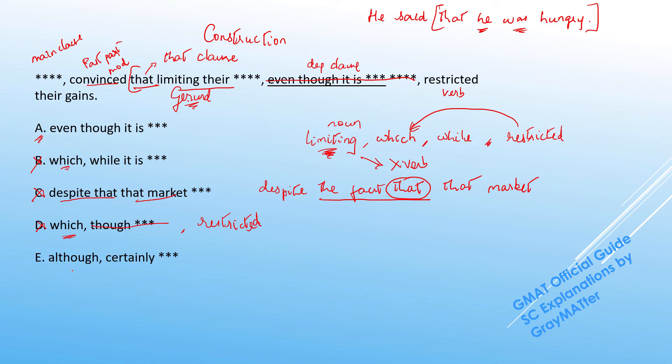And now in E, again if you check the construction, we have the subject limiting, the gerund, followed by the comma, and then we have this conjunction although, and then we have this phrase which is actually within commas. So if we read around this, we have the subject limiting although restricted their gains. So we can see that this restricted the gains is connected to although. And again in this case, we can notice that the gerund limiting does not have a main verb. So because of that incomplete construction, E also goes off.